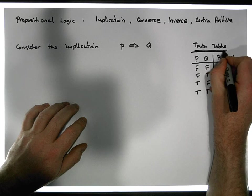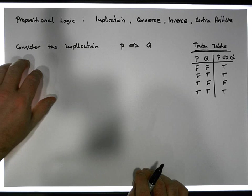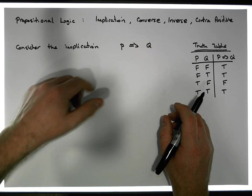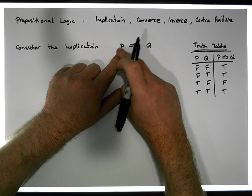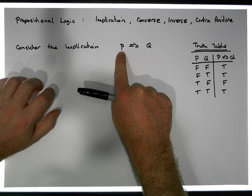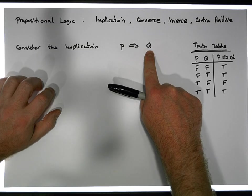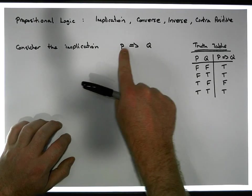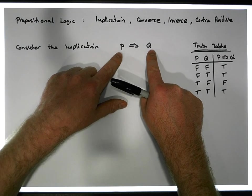This is our truth table for the straightforward implication, but there are many different things we could do with this implication. We could flip the premise and the conclusion around, we could negate the premise and the conclusion, or we could flip the negated conclusion and negated premise around to give us different implications. For example, if p was 'I went to the shop' and q was 'I bought a bottle of coke,' then this implication would say 'if I went to the shop, then I bought a bottle of coke.'